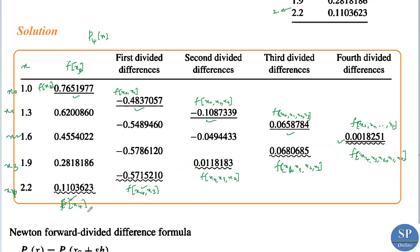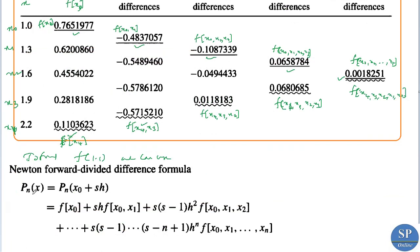To find f(1.1) we use Newton's forward difference formula: p_n(x) = f(x0) + s·h·f(x0,x1) + s(s-1)·h²·f(x0,x1,x2) + ... Here x0 = 1.0, x = 1.1, and h is the spacing between points. Since 1, 1.3, 1.6, etc. are equally spaced, h = 1.3 − 1 = 0.3.